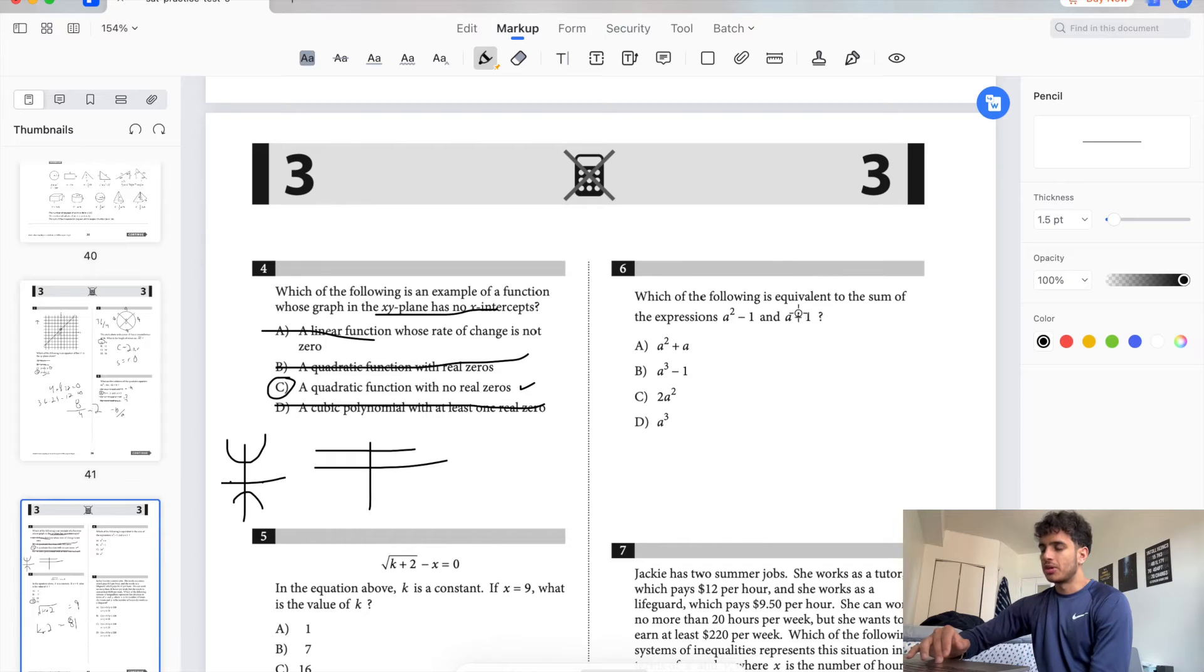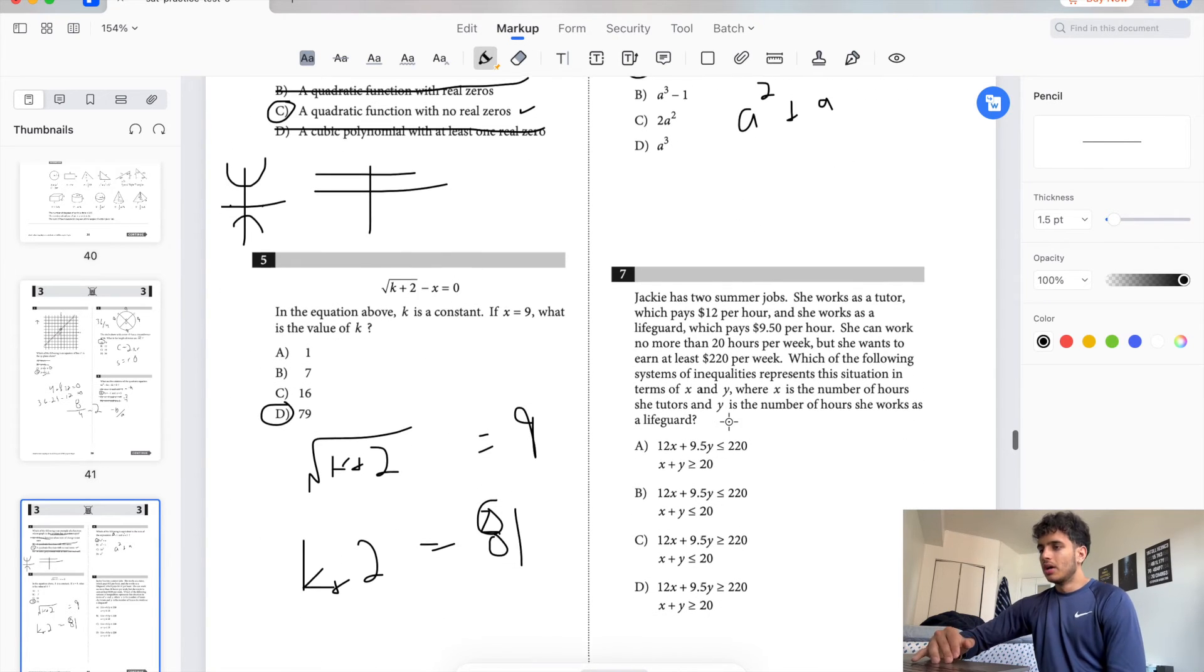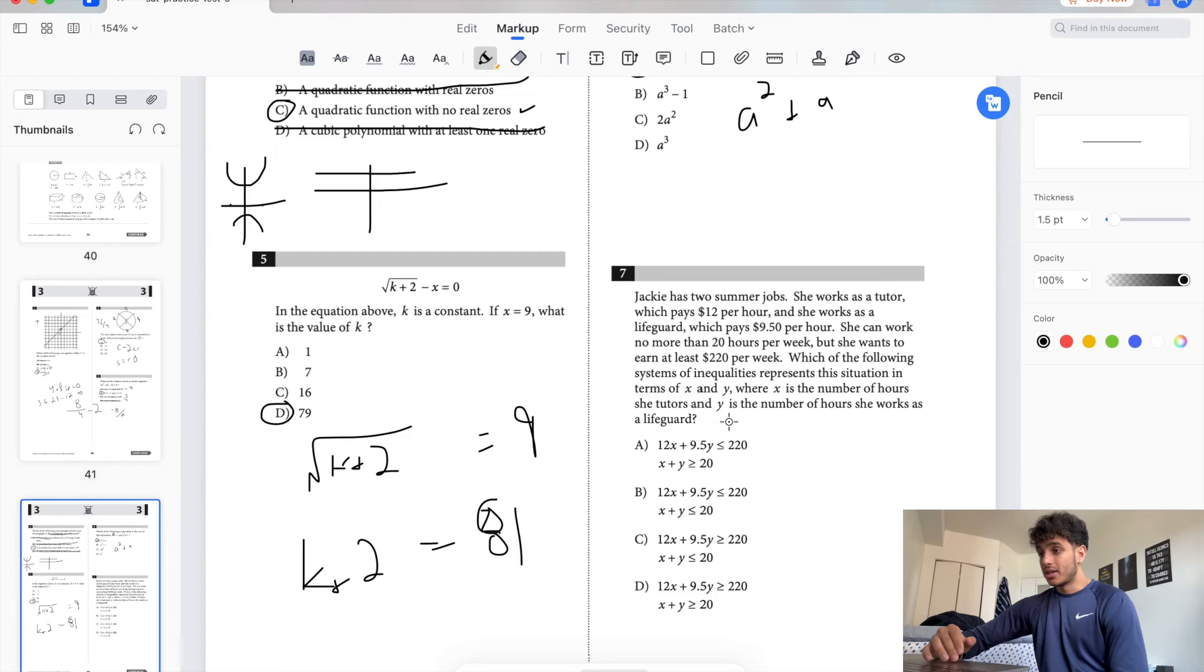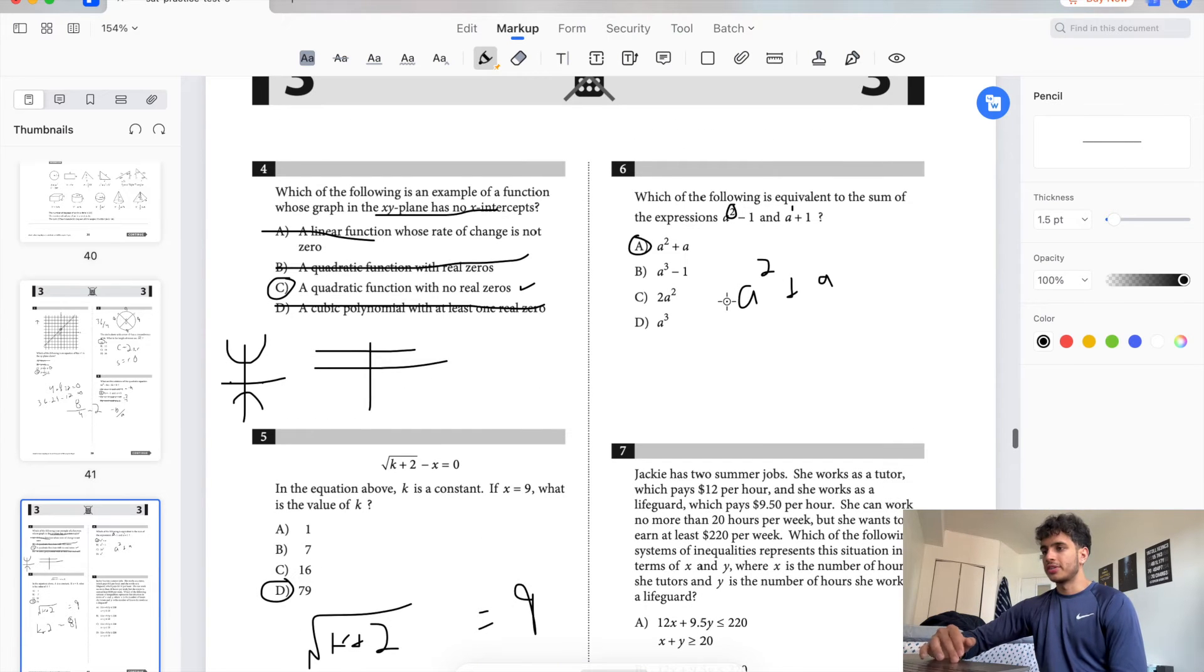Which of the following is equal to the sum of expression a squared minus 1, a plus 1? Remember, different degrees, so you cannot add them together. So we have a squared plus a, then negative 1 and plus 1 cancel. So the answer is A. By the way, don't get tripped up by stuff like this. You might think it's confusing because there's a's in it or variables, it's not x. Don't get tripped up.